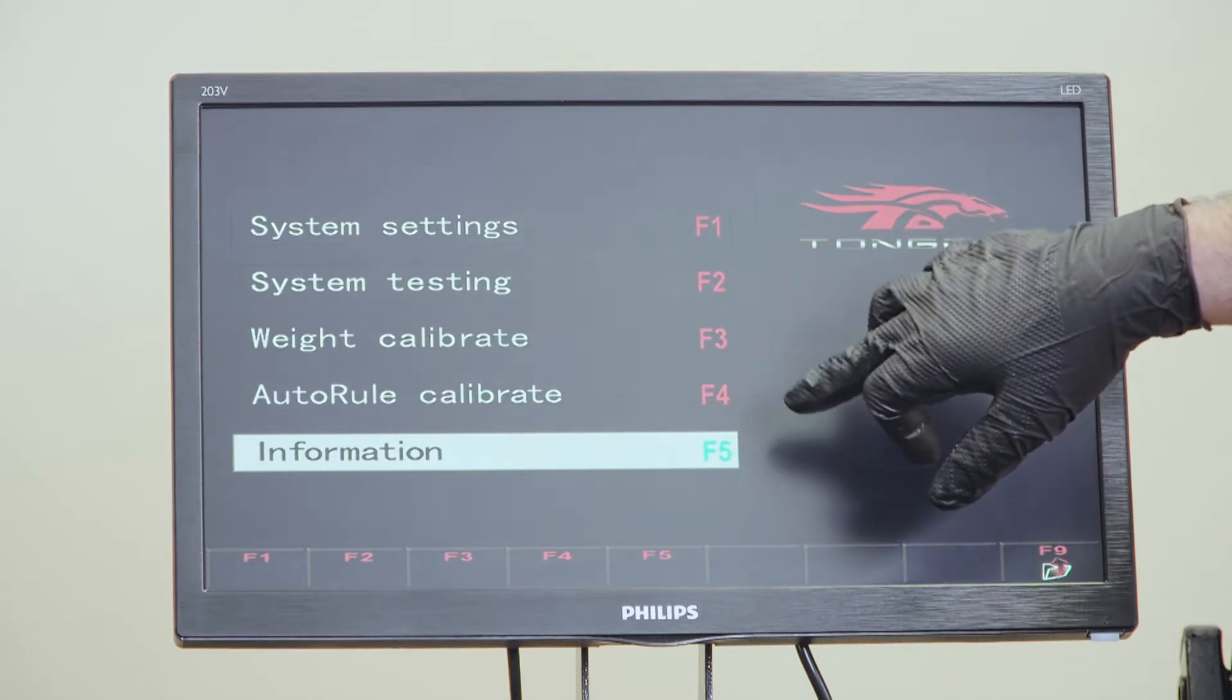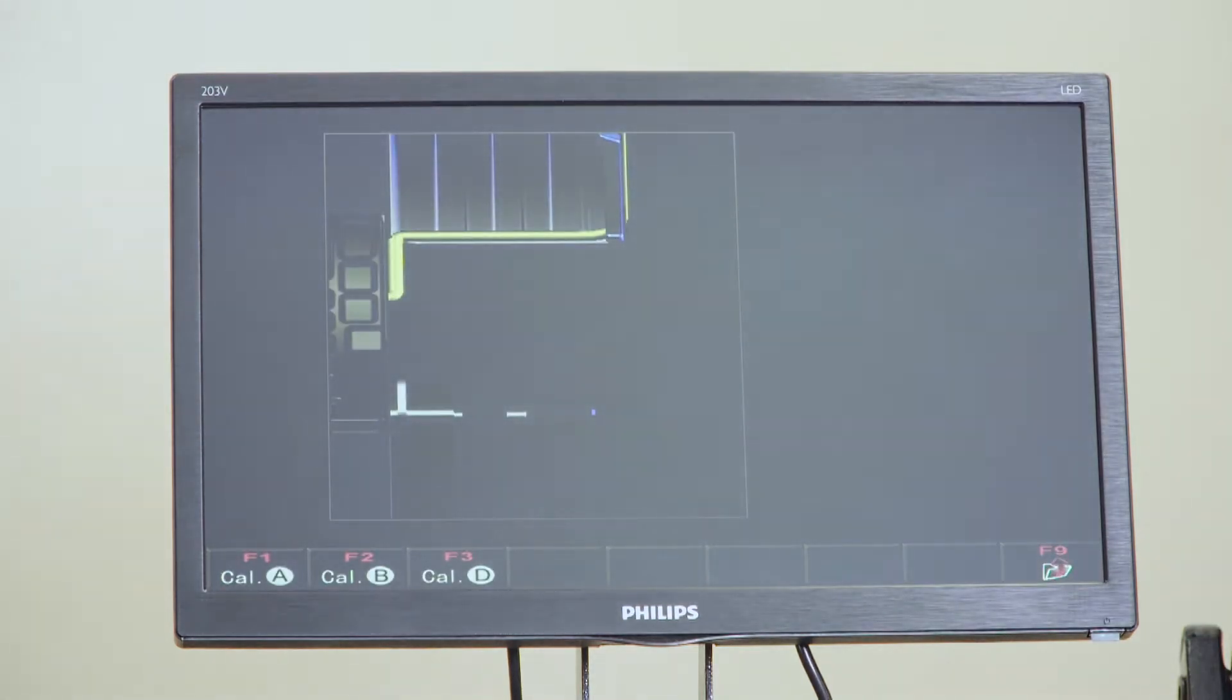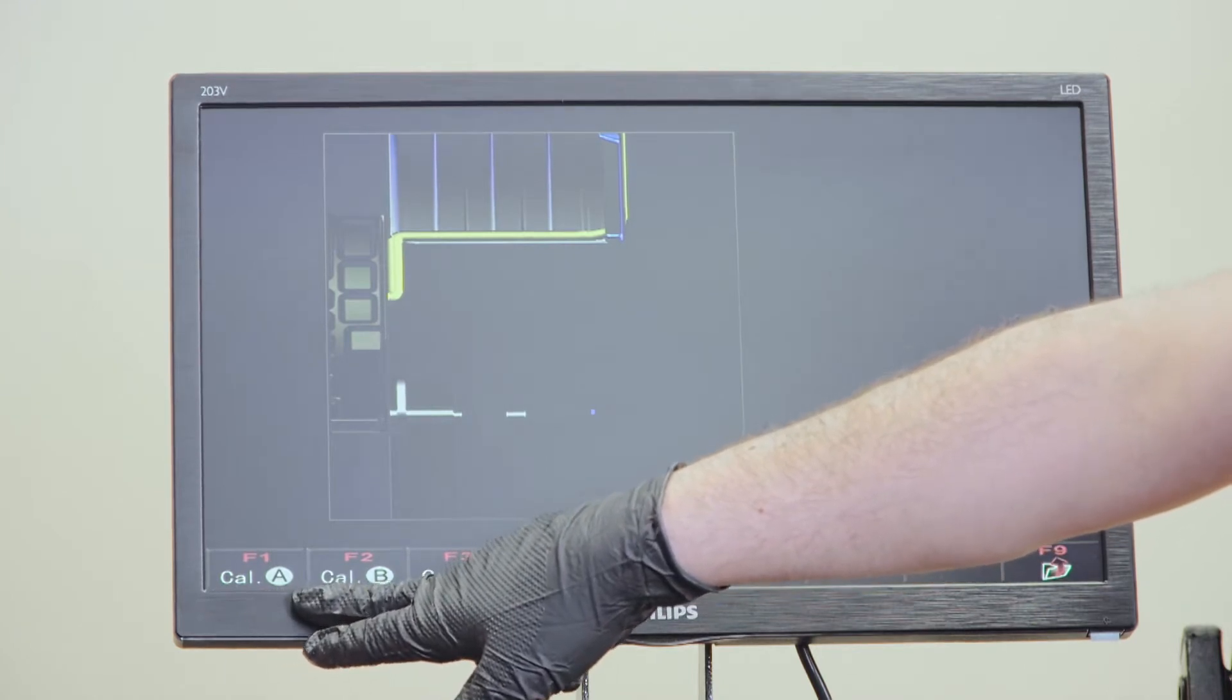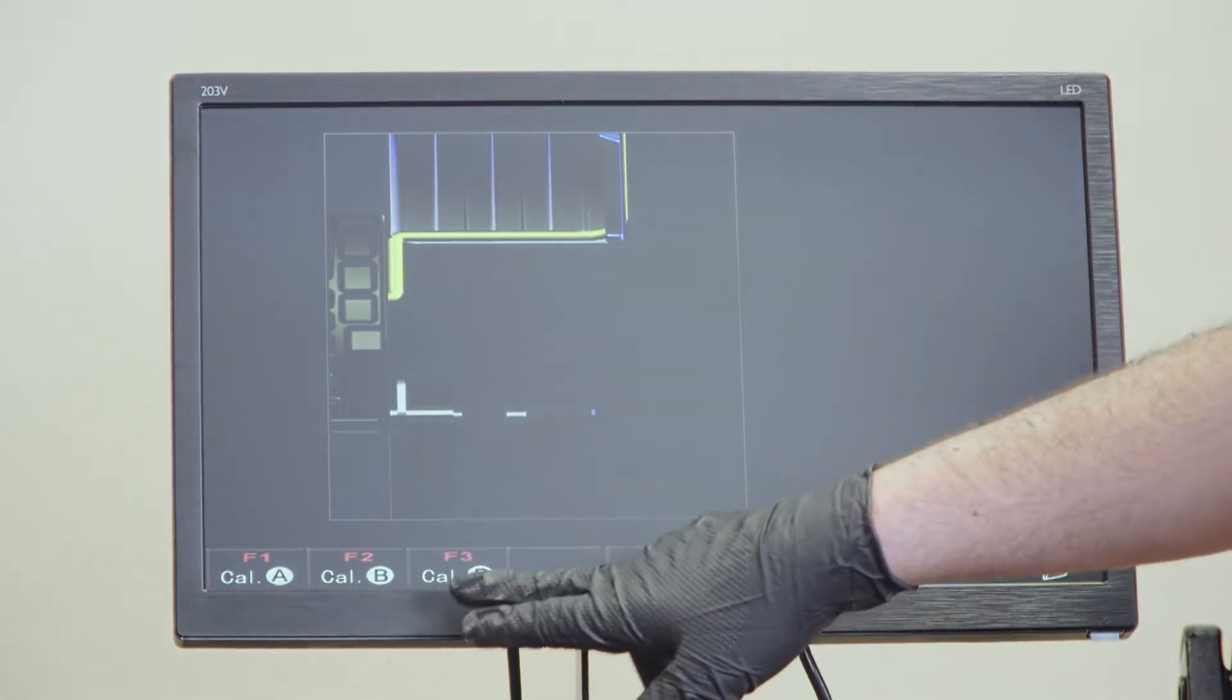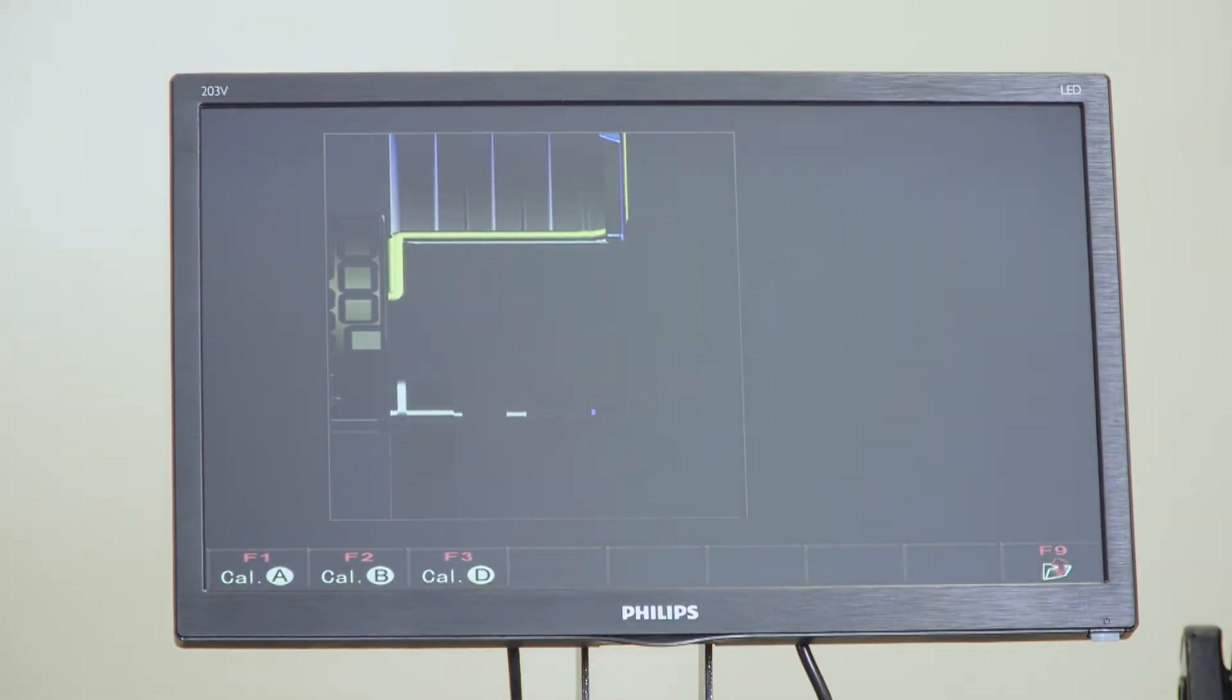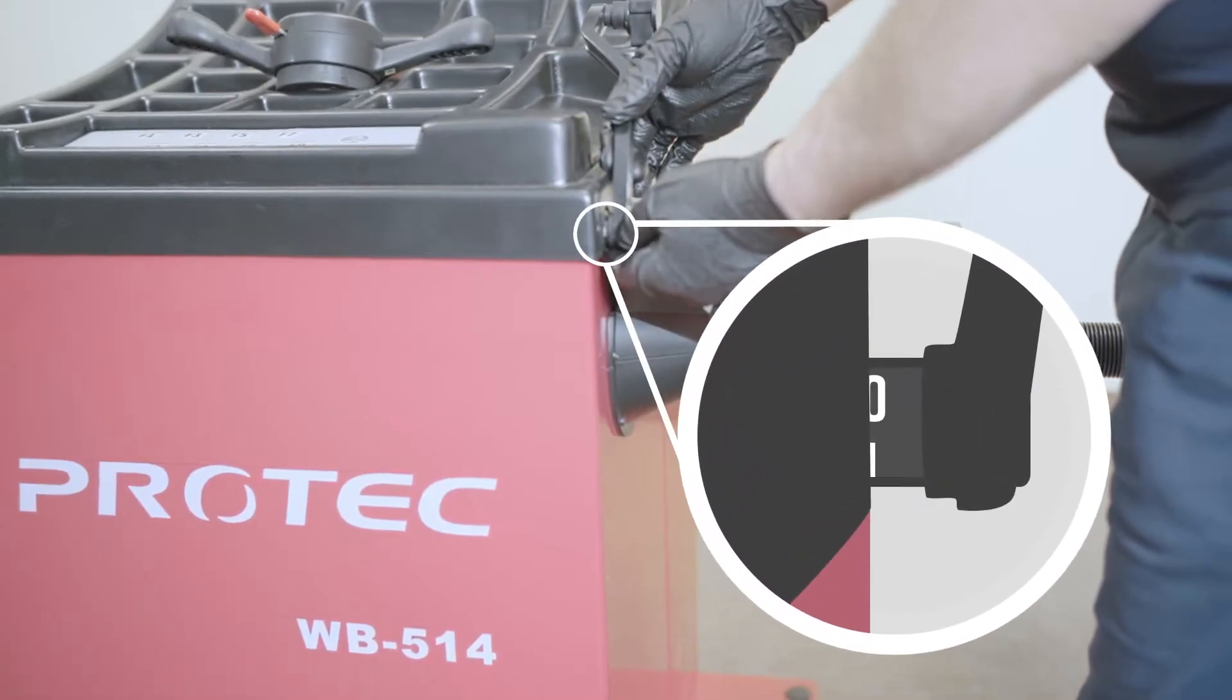Weight calibration or ruler calibration. We're going to go ahead F4 with ruler calibration. F1, A is distance ruler. F2, B is the width ruler. F3, D is the diameter ruler. We're going to go with F1. We're going to put the ruler on zero.